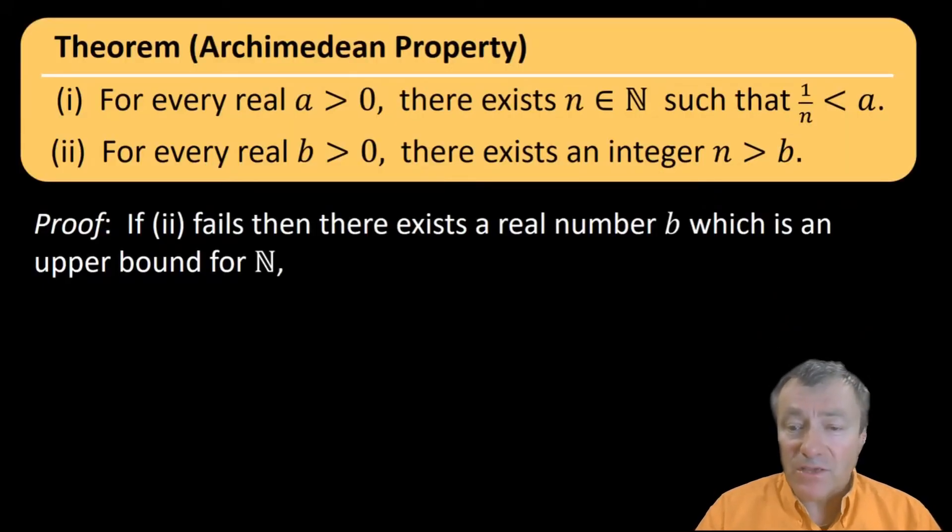Well, the Archimedean property is just something that you could add to our list of axioms, our growing list of axioms for the real numbers. But turns out, if you're going to assume the least upper bound property, then you don't need to list the Archimedean property also, because we can prove one from the other. That's, in fact, what we use, the least upper bound property, to prove the Archimedean property. So let's go ahead and do that.